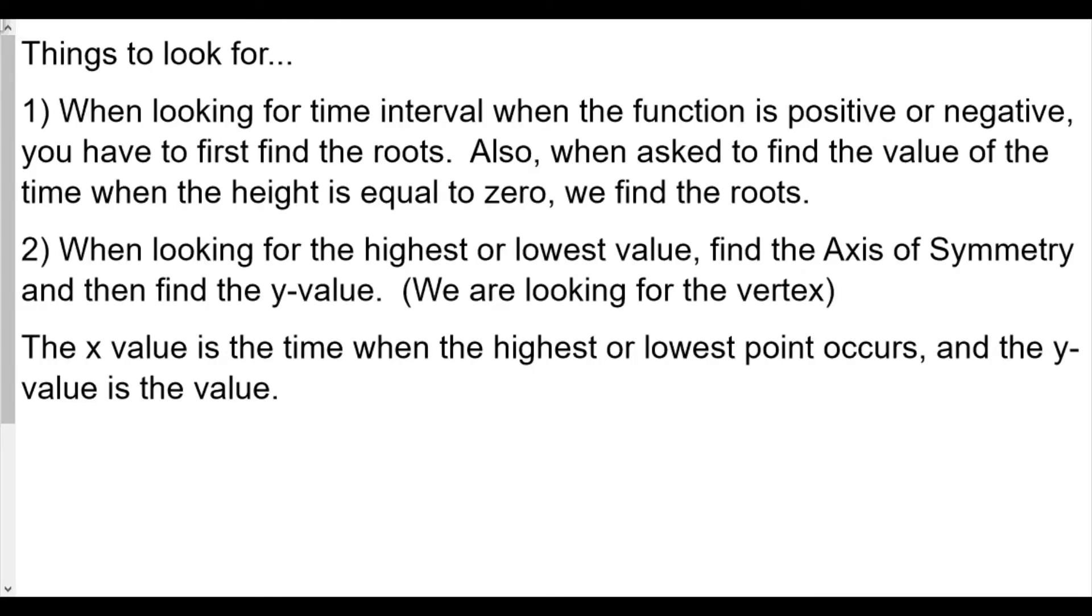When looking for time intervals when the function is positive or negative, you have to find the roots. Also, when asked to find the value of time when height equals zero, you find the roots. The second thing: when looking for the highest or lowest value, find the axis of symmetry and then find the y-value. We're looking for the vertex. The x-value is the time when the highest or lowest point occurs, and the y-value is the actual value.